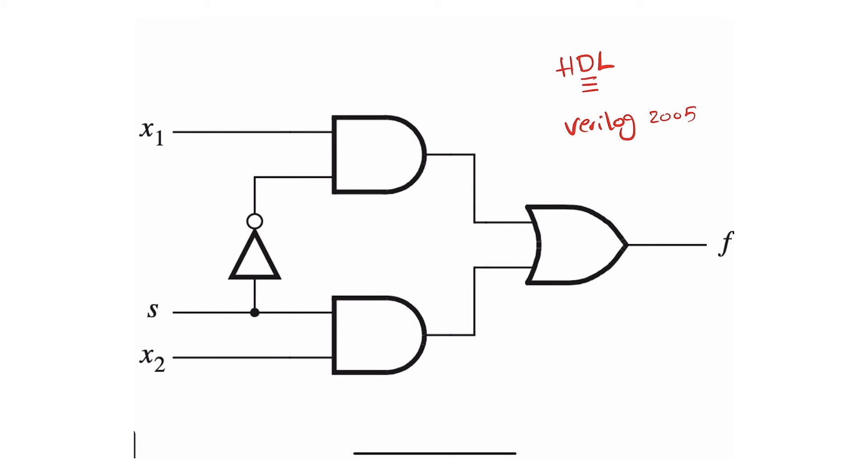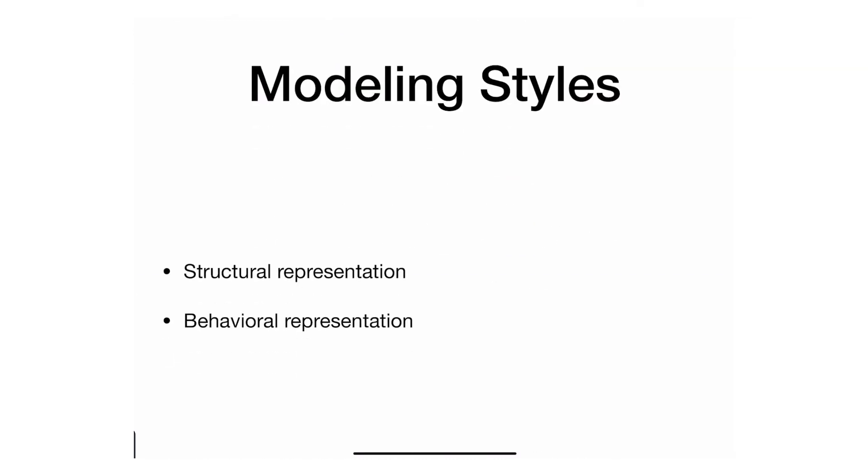What behavioral does is the following: when is this f asserted? Well, it's asserted if x2 and s are one, or if x1 is one and s is zero. It's behavioral—not necessarily describing the structure. We're going to go through different codes to describe it, but for now I just want you to know that there are structural representation and behavioral representation. Let's move on and write some code.